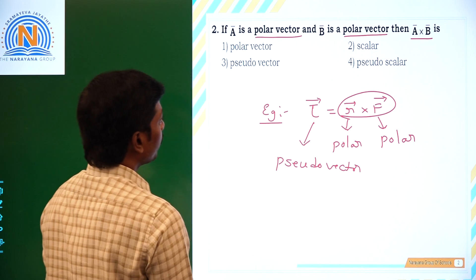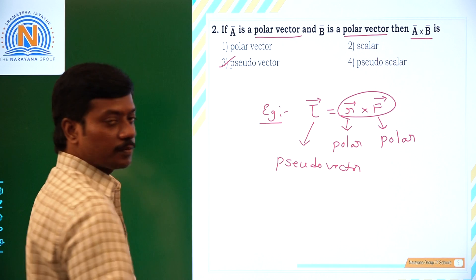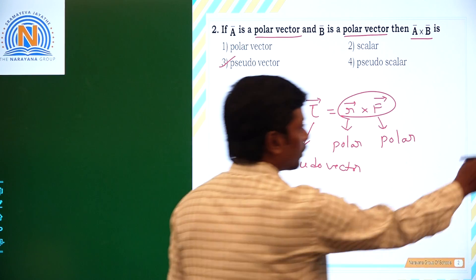That's why the answer is pseudo vector. Third option is correct. Let's see the third question.